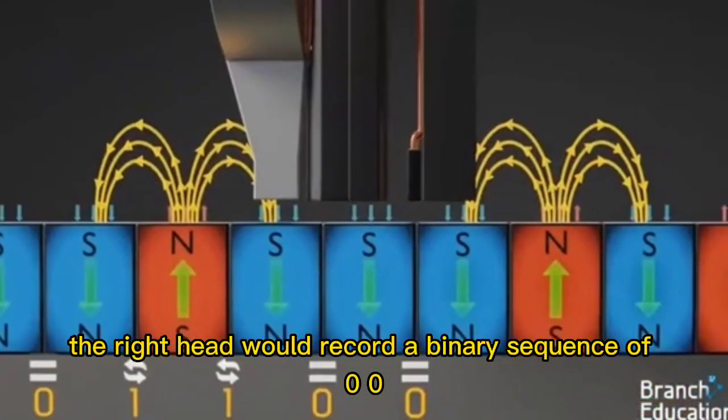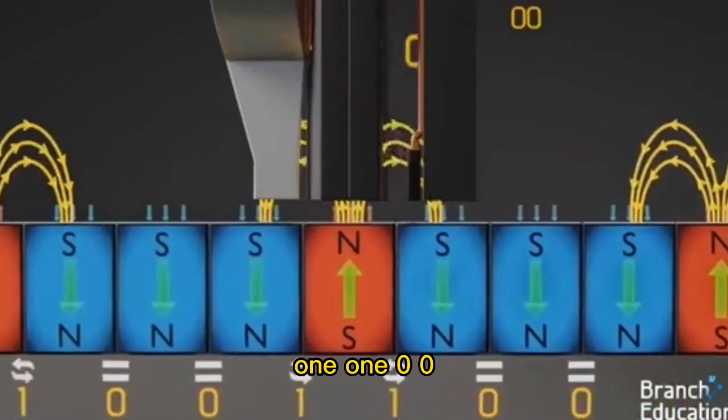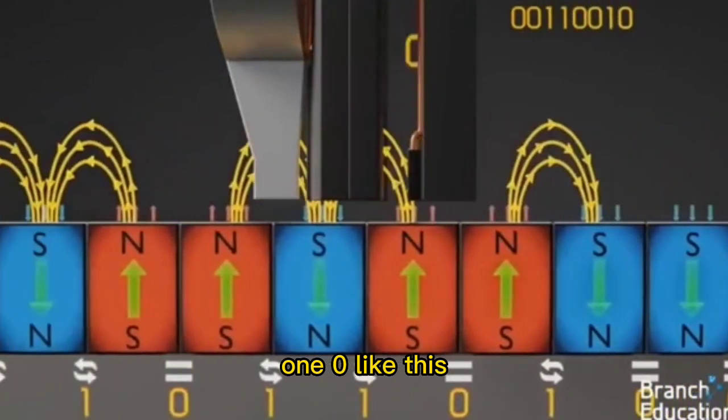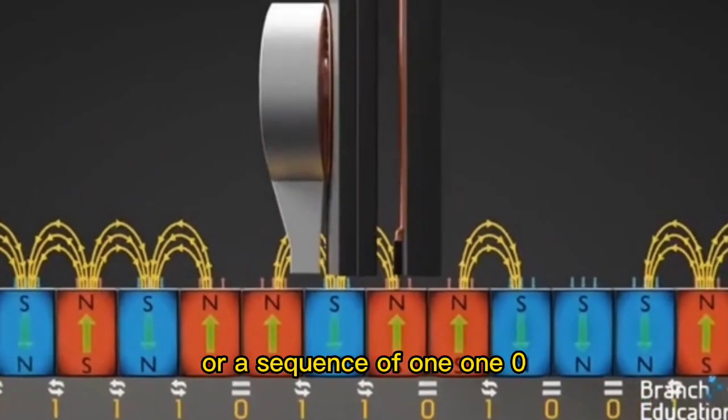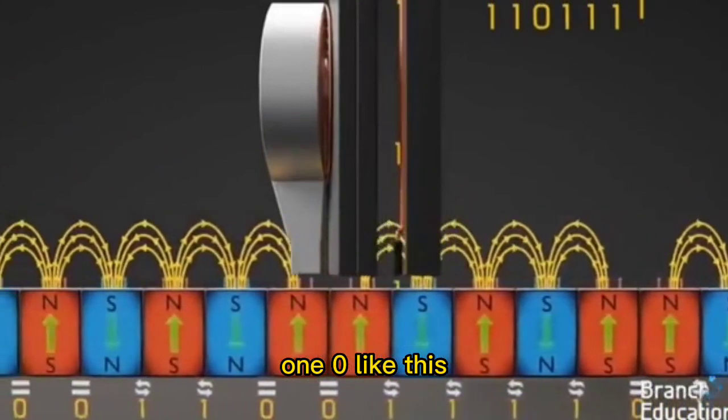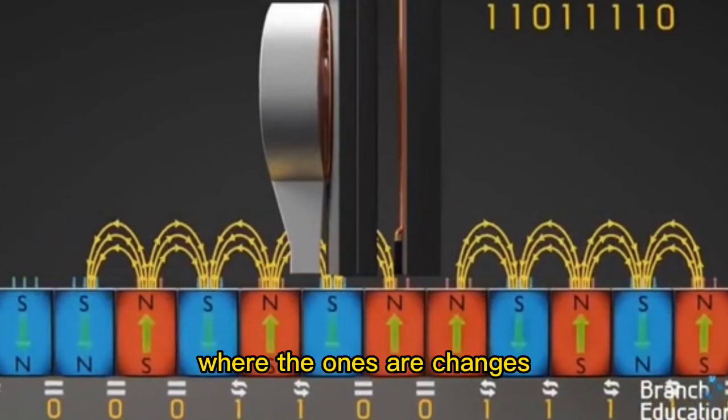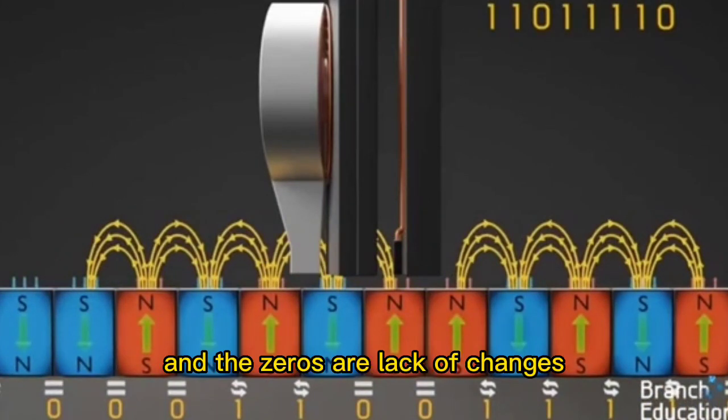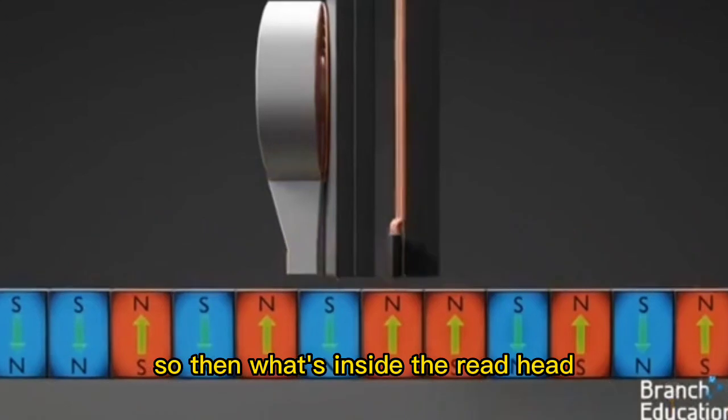Therefore, the write head would record a binary sequence of 0 0 1 1 0 0 1 0 like this, or a sequence of 1 1 0 1 1 1 0 like this, where the 1s are changes and the 0s are lack of changes.